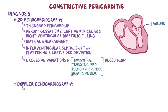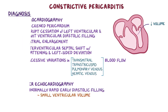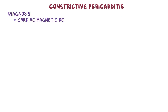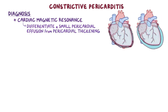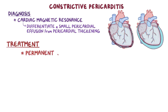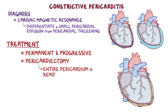Doppler echocardiography shows an abnormally rapid early diastolic filling associated with a small ventricular volume. Cardiac magnetic resonance is sometimes done to help differentiate a small pericardial effusion from pericardial thickening. In the majority of cases, constrictive pericarditis is permanent and often progressive. The only definitive treatment option is pericardiectomy, or pericardial stripping, which is a surgical procedure where the entire pericardium is peeled away from the heart and removed.